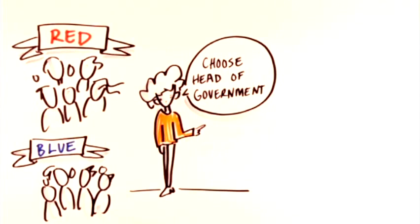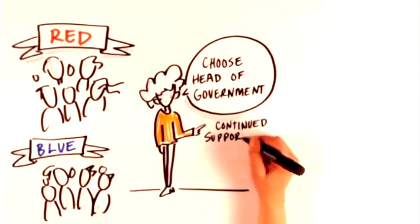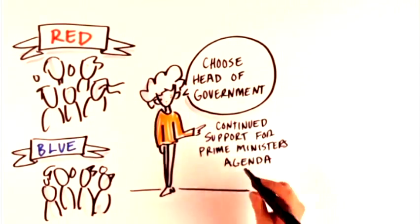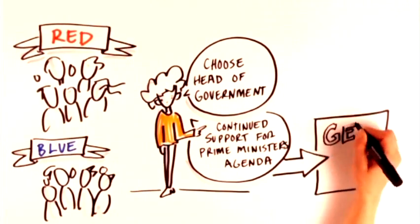Having a political party enabled the prime minister to rely on his party members' continued support for his agenda, rather than having to constantly fear losing their votes in the legislature. Essentially, political parties made it easier for governments to get things done.